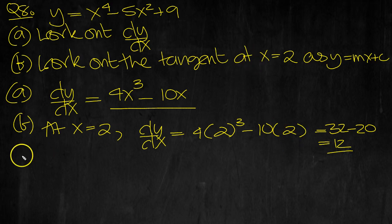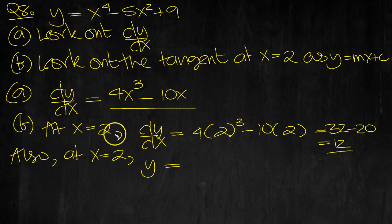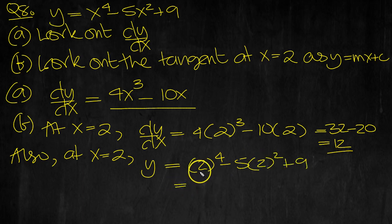The tangent at x equals 2. At x equals 2, what does y equal? We need the coordinate at 2, so 2 to the 4, minus 5 times the something squared plus 9. So the input is 2, that's 16, minus 4, 5 fours are 20, plus 9. 16 and 9 is 25, take 20 is 5.